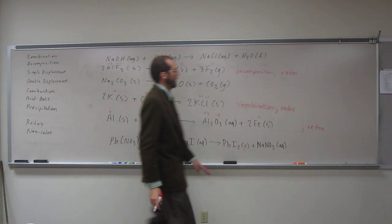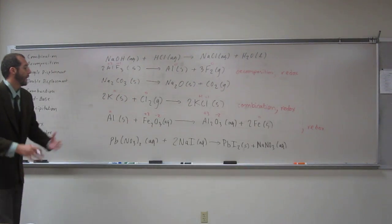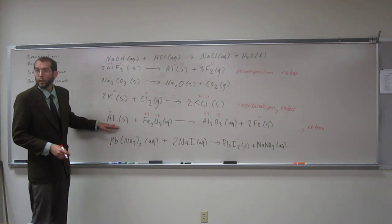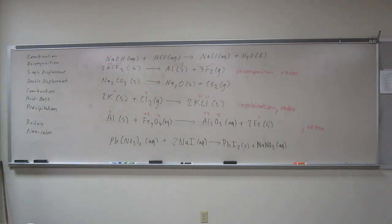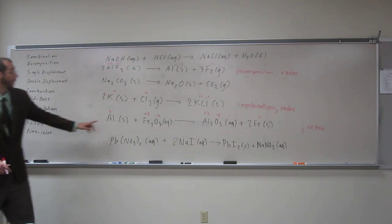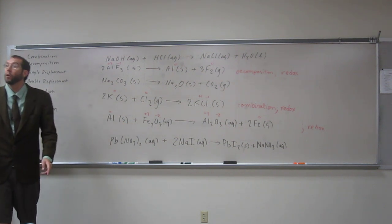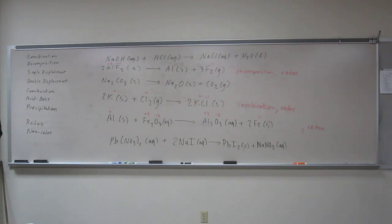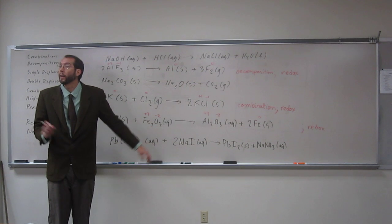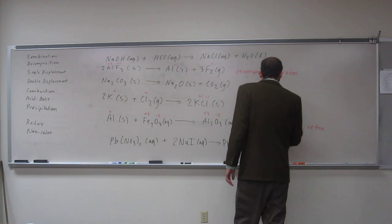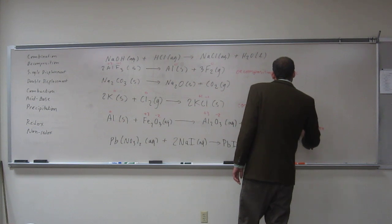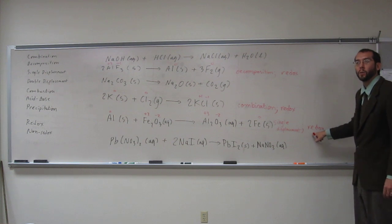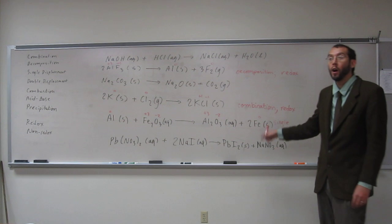Since this is a redox reaction, it's also something else. Hopefully you can see that aluminum is stealing iron's partner — aluminum is stealing oxygen from iron and bumping iron out of the way so iron has to go off by himself. That's called a single displacement reaction, because one thing is displacing another. If we would have noticed that first, we would have automatically been able to say it's a redox reaction, because single displacements are always redox reactions.